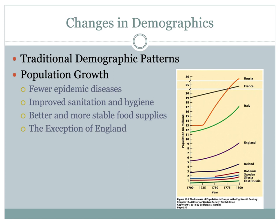This traditional pattern was broken in the 18th century with the introduction of the Agricultural Revolution and a greater availability of food, which led to a population increase — more food equals more babies. In the year 1700, at the start of the 18th century, the European population was about 100 to 120 million people. By the end of the century in the year 1800, it was about 180 to 190 million people, and this growth continued into the 19th and 20th centuries.